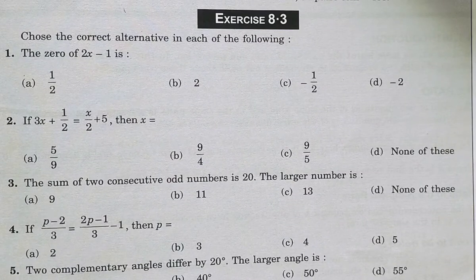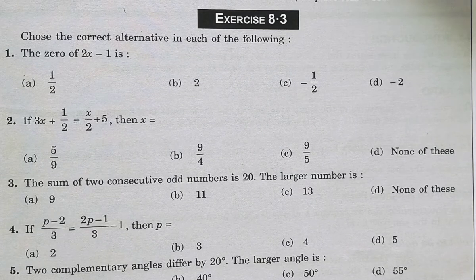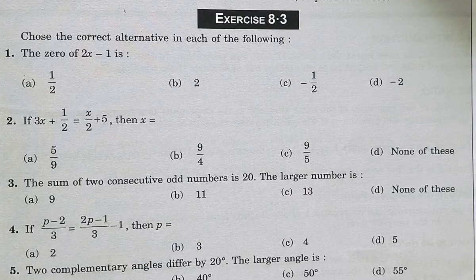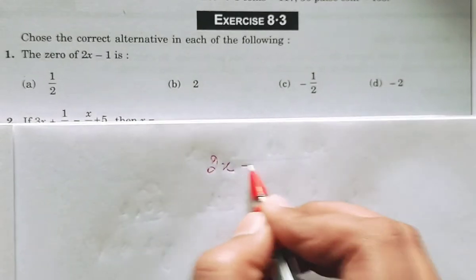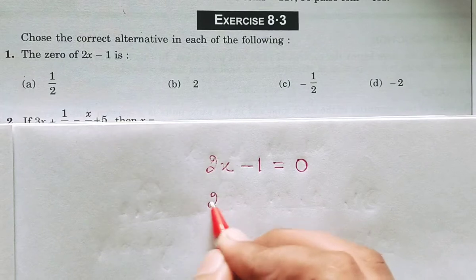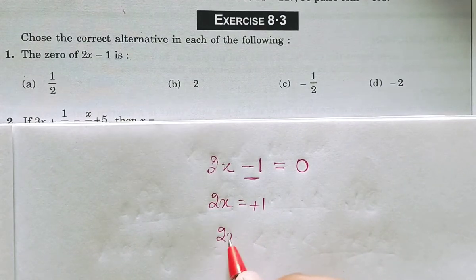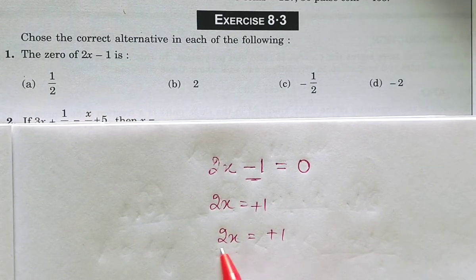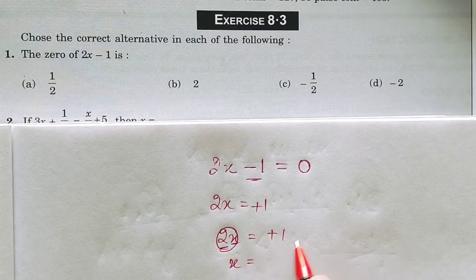So students, you can see that the first question is: the zero of 2x−1 is. That means we have to find where 2x−1 is equal to 0. So 2x−1 = 0, which gives 2x = 1, therefore x = 1/2. That will be the right answer.